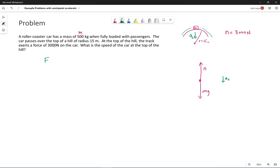So when we write out net force in the radial direction is equal to the mass of this roller coaster car with its passengers, times the acceleration, I'm going to call towards the center the positive direction. So mg, the force of gravity, points towards the center.